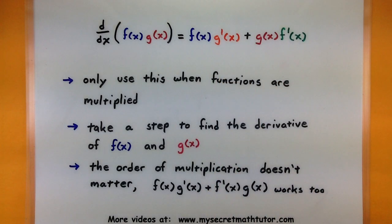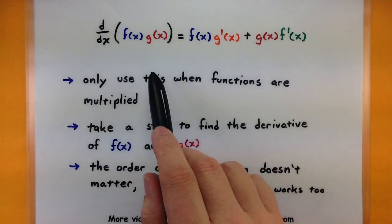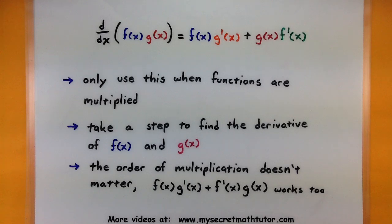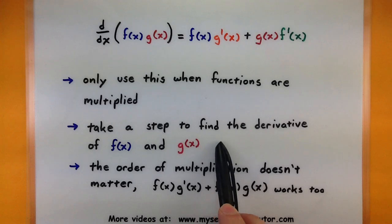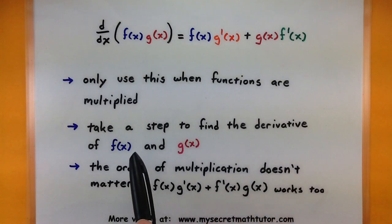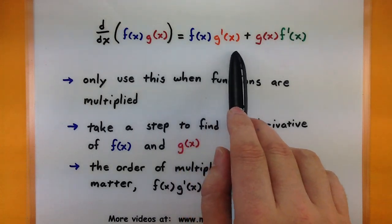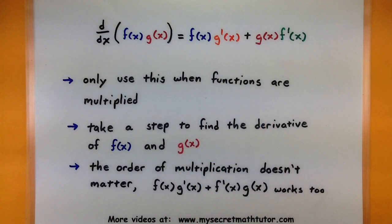Here are some good tips when you are using this product rule. First, make sure that you are only using this rule if you have two functions that are being multiplied. If they're being added, subtracted, divided, or something different, then you would simply use a different rule like maybe the chain rule. Also, it's a good idea to take an extra step to go ahead and find the derivative of f and the derivative of g. That way you're not trying to figure out derivatives and put these pieces in their proper spot at the same time.